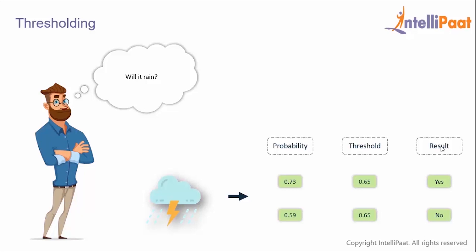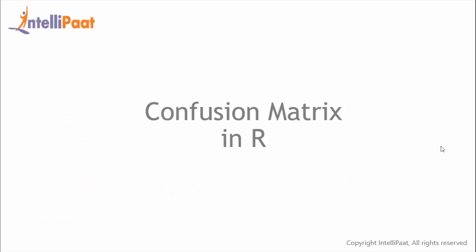Let's understand thresholding with an example. We're trying to find out if it will rain or not based on other factors, and the threshold value is 0.65. In the first case, the model gives a probability of 0.73 for rain — since it's greater than 0.65 it's classified as yes. In the second case, the model gives a probability of 0.59 — since it's less than the threshold it's classified as no.